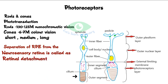The inner segment connects to the outer segment via a cilium and has two subsections: the ellipsoid, which contains mitochondria, and the myoid, which contains glycogen. Then comes the cell body containing the cell nucleus. The final portion is the axon-like fiber terminating in the photoreceptor synaptic processes — called a spherule in rods and a pedicle in cones. The axons of photoreceptors connect with the dendrites of the bipolar cells.